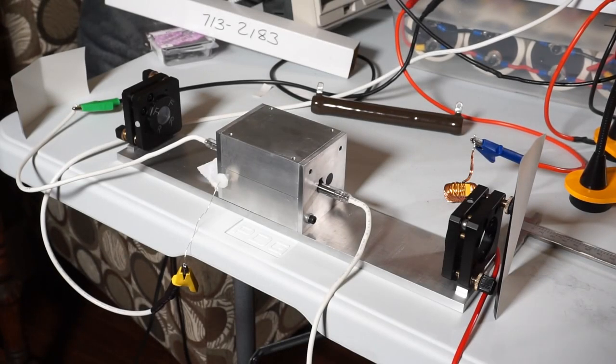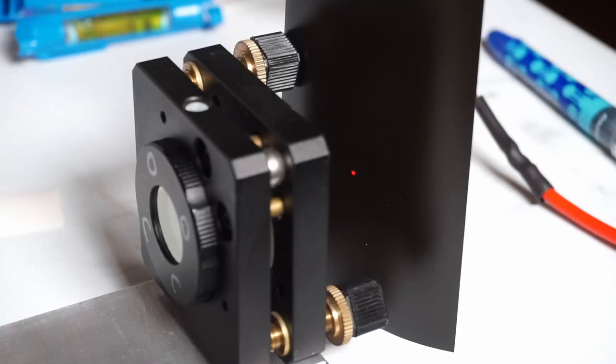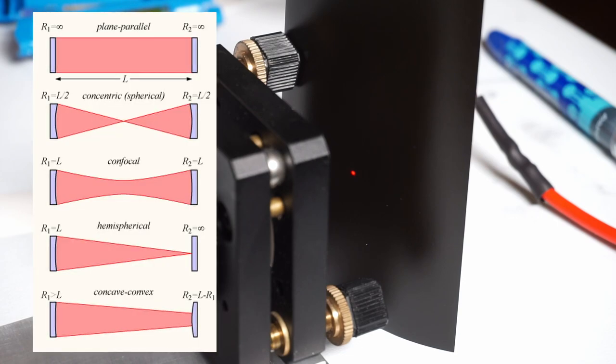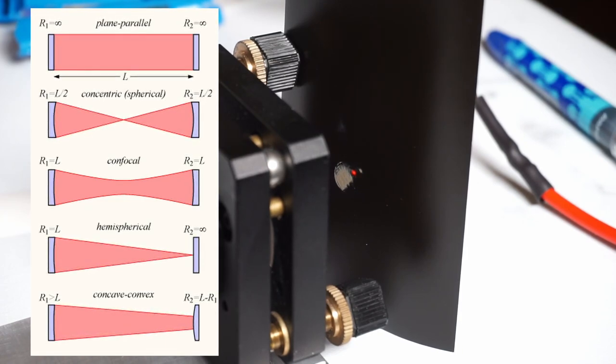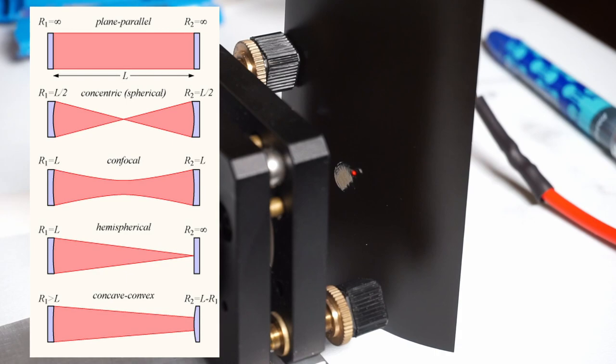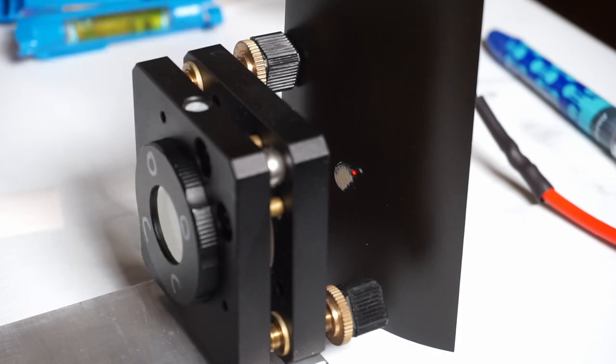The reason the mark was so faint is because the optics in the laser were not aligned very well. This laser uses a plain parallel optical resonator which, while inexpensive and easy to design, is very finicky and unforgiving unlike other designs which are much more forgiving.